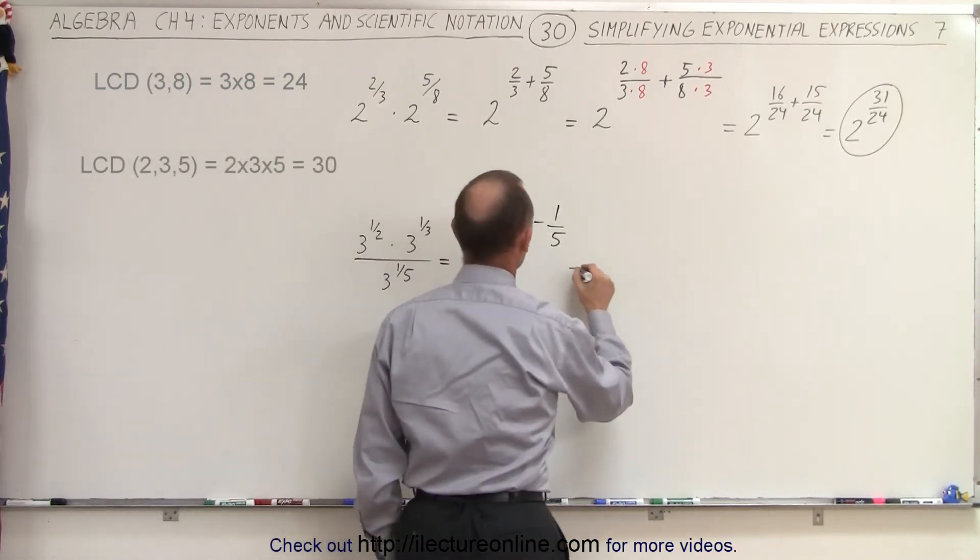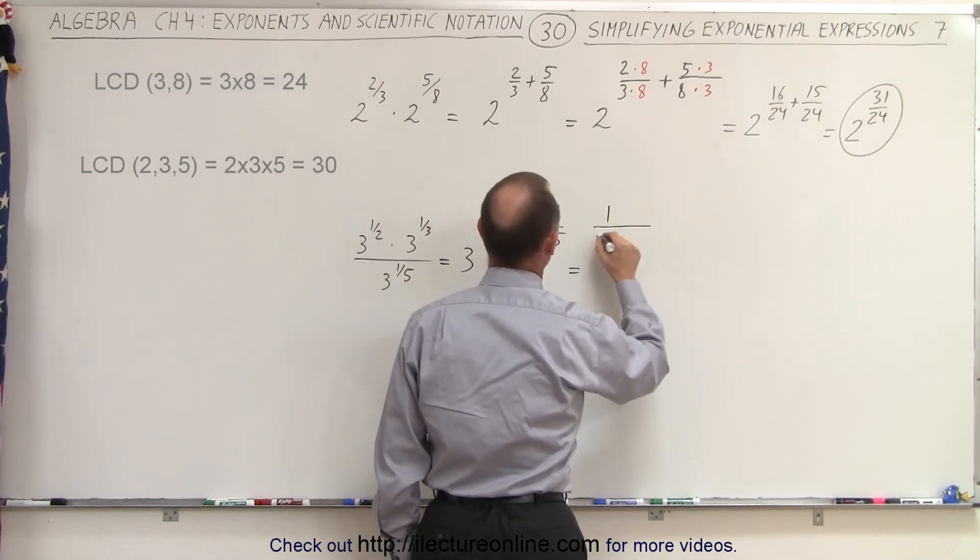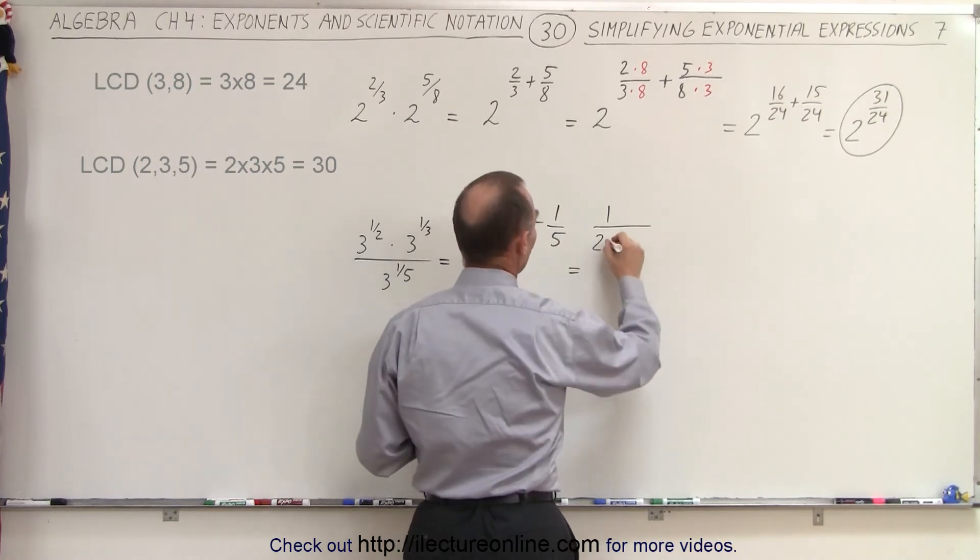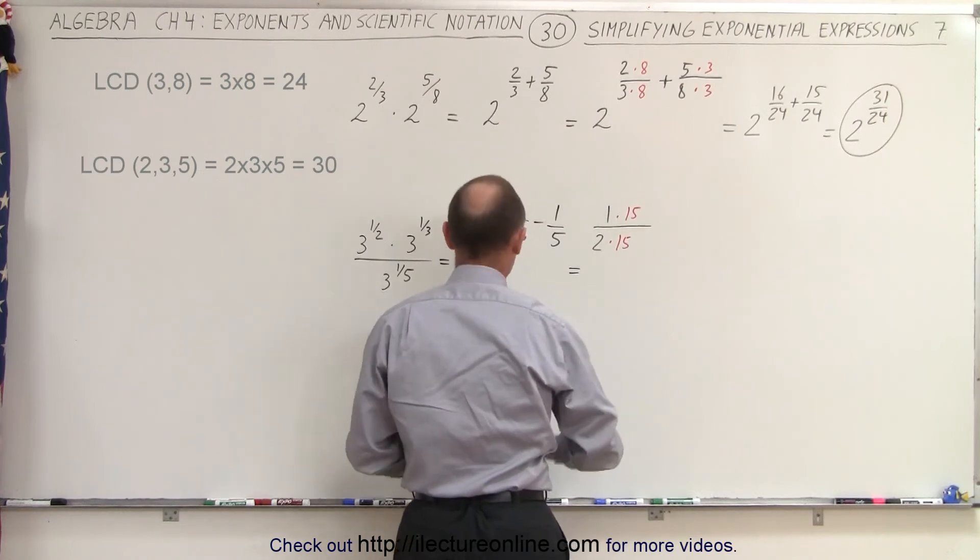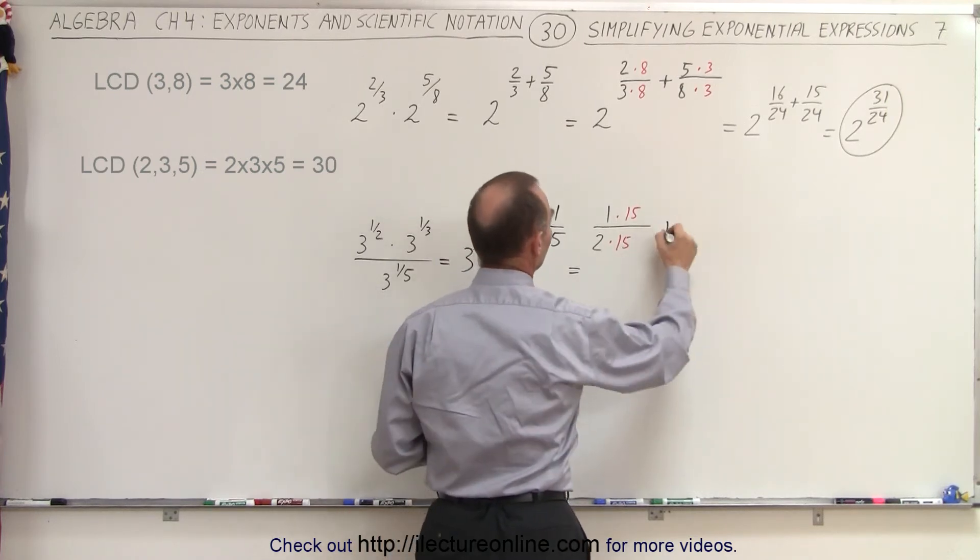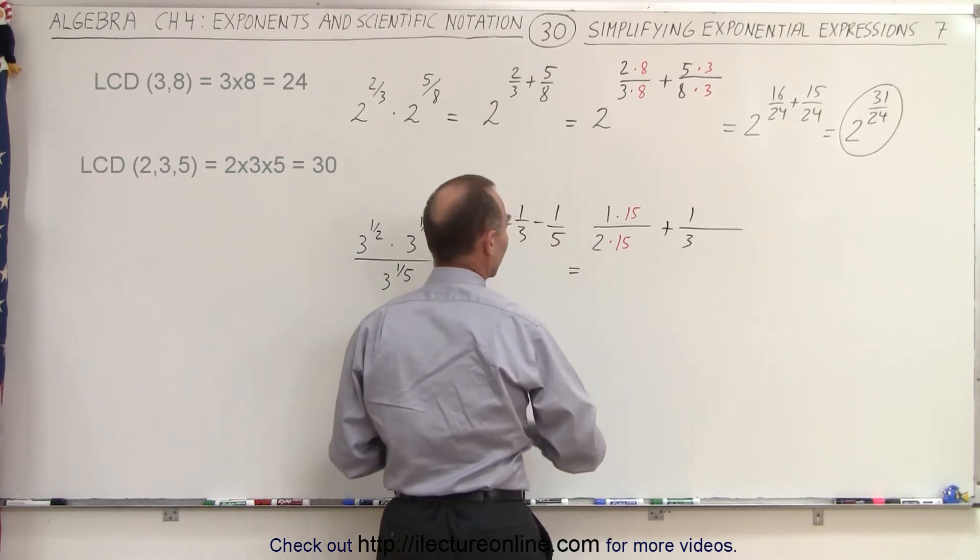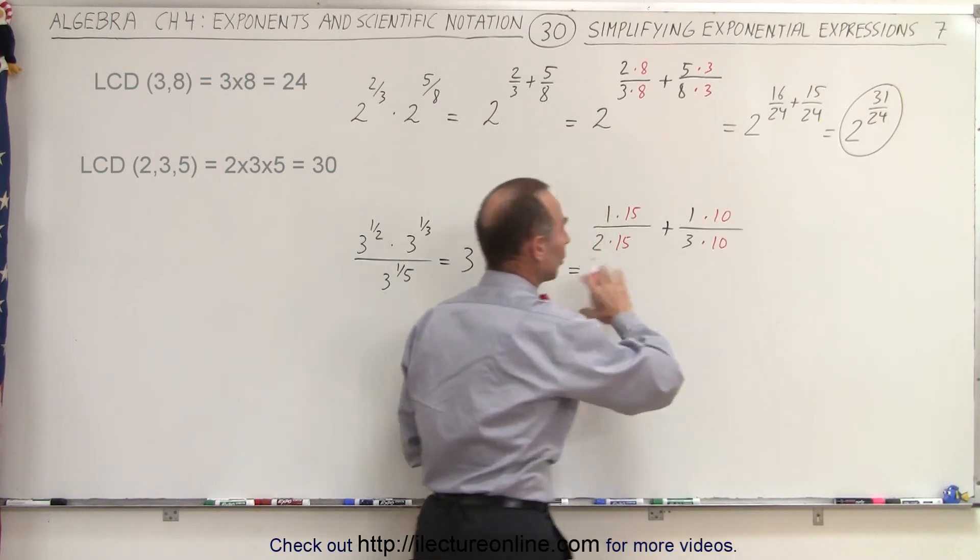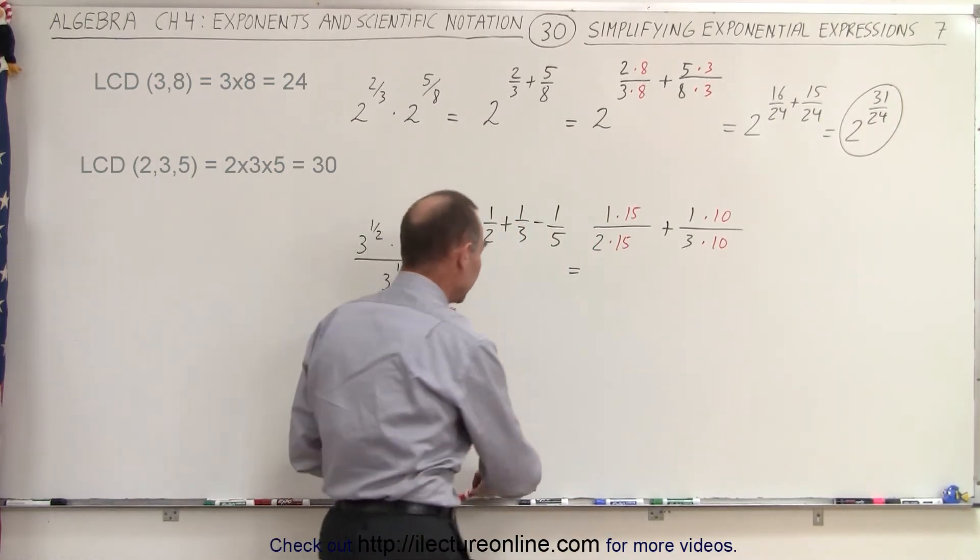So this is equal to something over 30. So this becomes 2 times - we have to multiply the denominator by 15 and the numerator by 15. So now we have plus 1/3. And again, we're going to multiply the denominator by 10 and the numerator by 10. Again, the lowest common denominator is 30, so we have to turn every one of these denominators into 30.